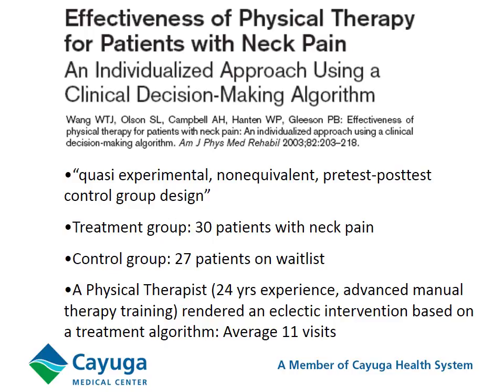Looking at evidence, here is a trial by Wong et al., published in 2003, looking at using a clinical decision-making algorithm to improve outcomes for patients with neck pain. This is a quasi-experimental, non-equivalent, pre-test, post-test, control group design — so there may be some issues. Essentially there was a treatment group and a control group, which was essentially patients placed on a wait list. A single physical therapist with 24 years of experience and advanced manual therapy training provided treatment. So if we look at external validity, if you are an extensively trained manual therapist with 24 years of experience, this study may apply to you. For the rest of us, this decision-making process may not be so applicable.